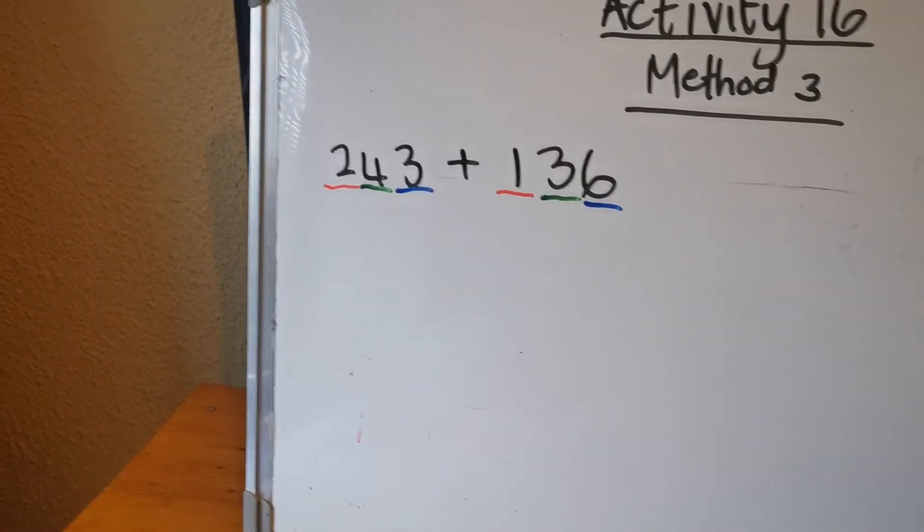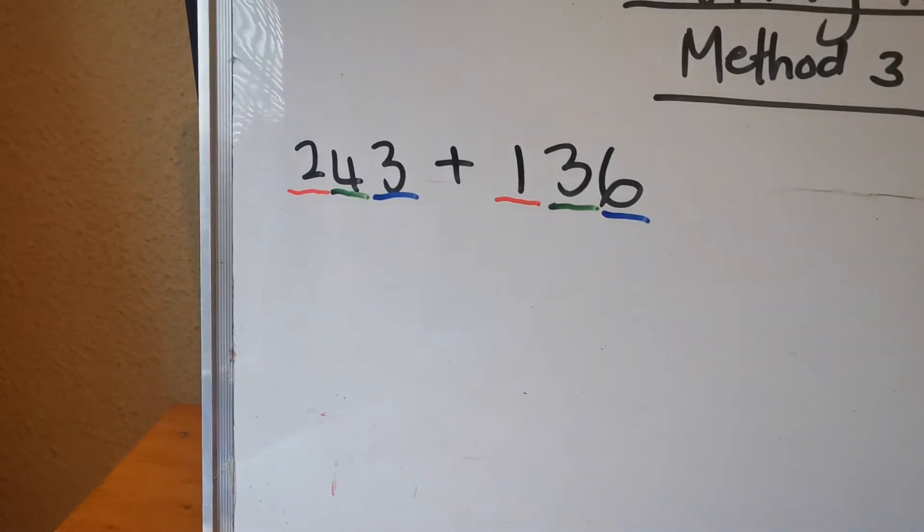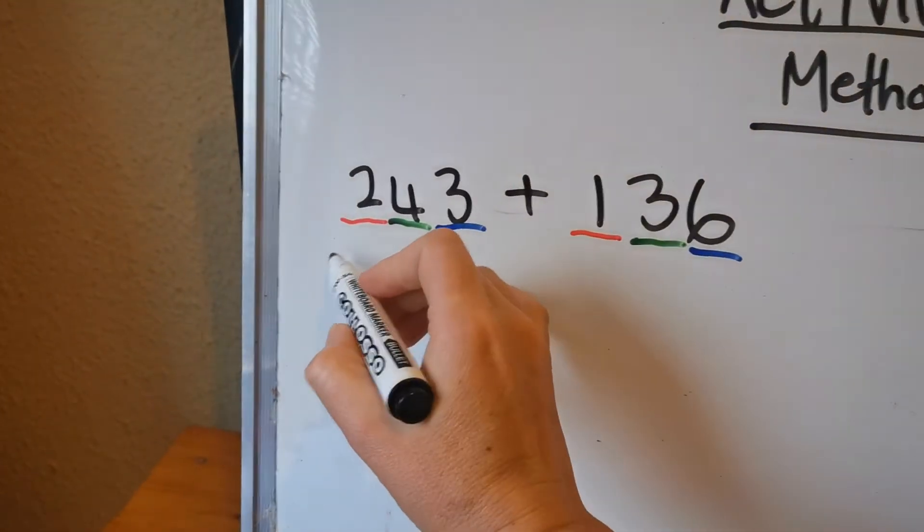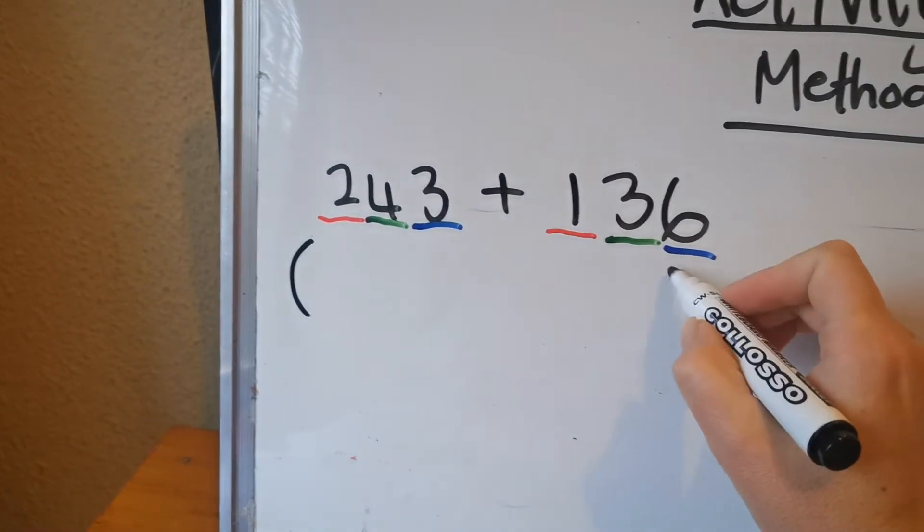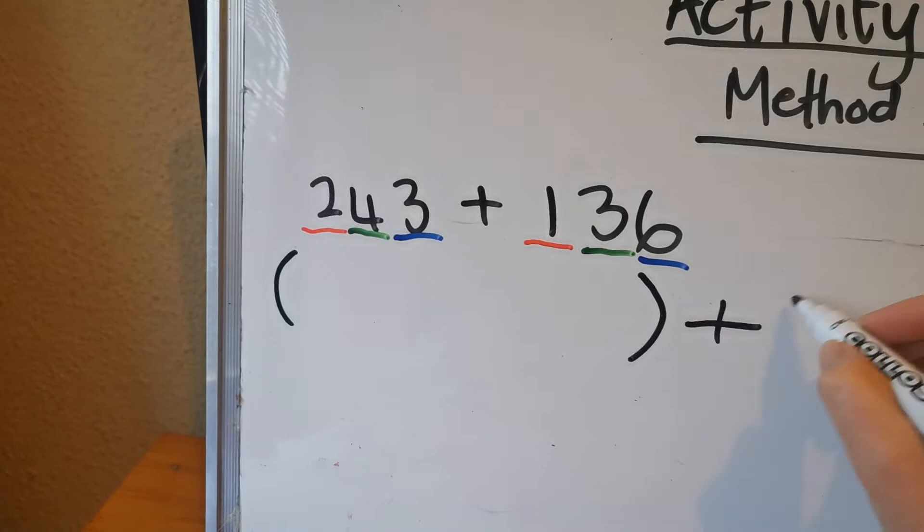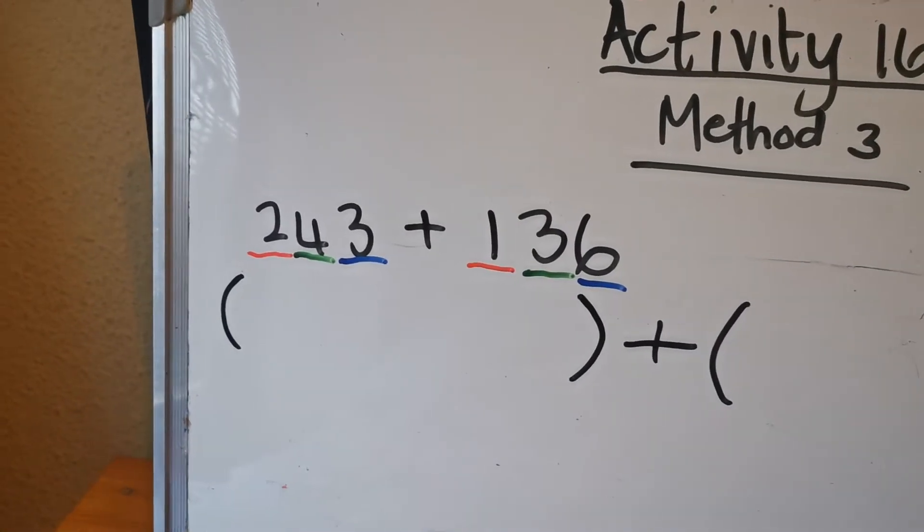Now I want you to write it in two brackets. So I want you to make two brackets, nice and big because you're going to write three numbers in it.